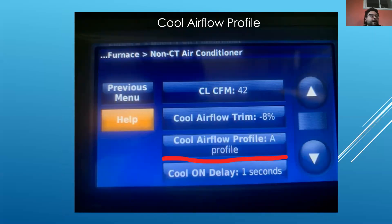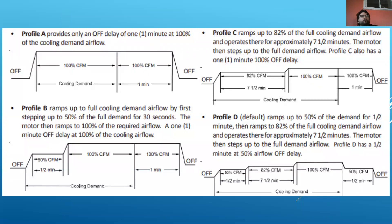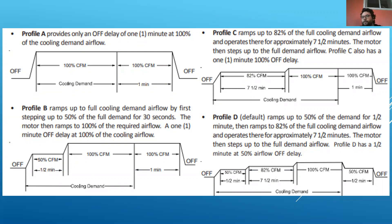We can also set profiles, which control the actual ramping up and down of the fan during a cooling call. Profile A ramps up to 100% of demand right away — no attempt to dehumidify with a lower fan speed. This might work for customers who want immediate airflow or for certain zoning systems. Profile B runs at 50% operation for half a minute, giving extra dehumidification by getting the coil really cold to pull moisture out of the air. Profile C ramps up to 82% right away for about seven and a half minutes, then bumps to 100% if not satisfied — that's pretty good for dehumidification.